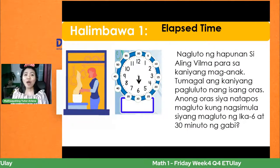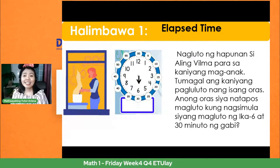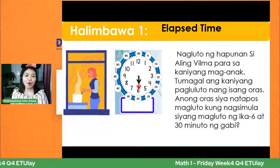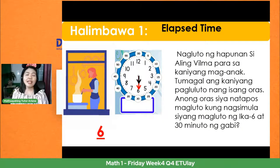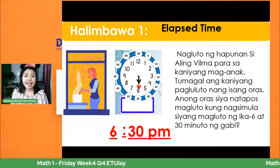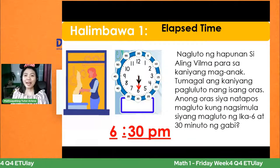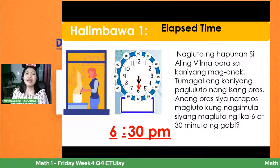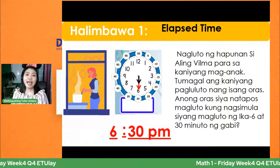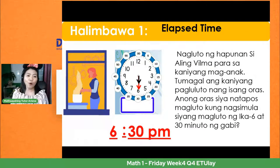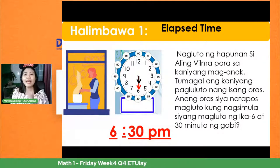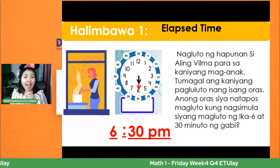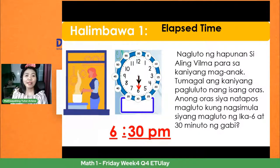Anong ibig sabihin ng elapsed time? Yun yung makalipas ang oras. Mula 6:30 ng gabi, nagluto si Aling Vilma at nakalipas ang isang oras nang siya ay matapos magluto. Ang sabi ng mga bata, natapos siya ng 7:30. Tingnan natin: 6:30 siya nagsimulang magluto. Makalipas ang isang oras, ibig sabihin idadagdag natin ang isang oras o 60 minutes.